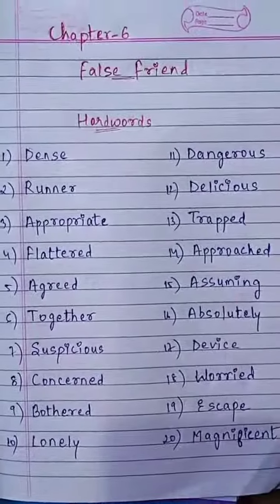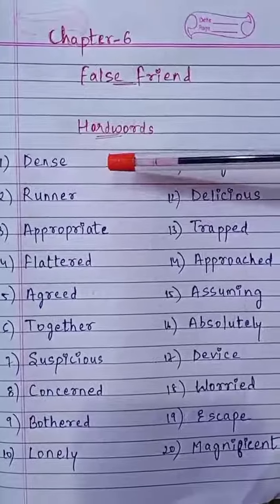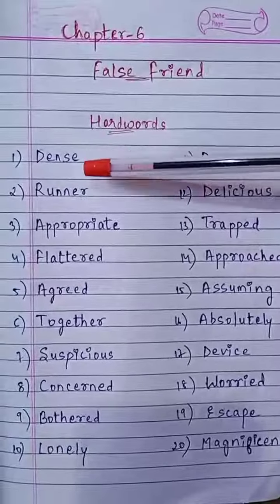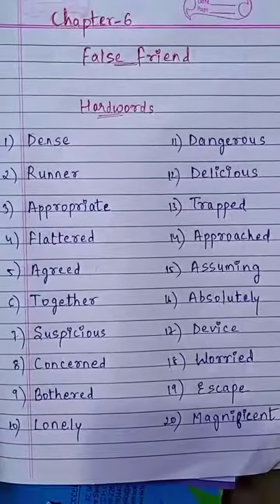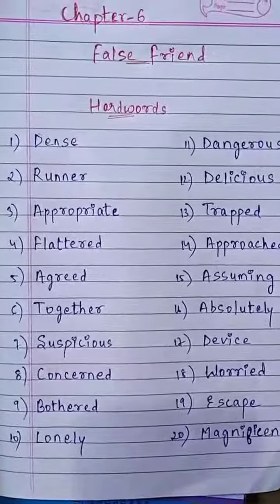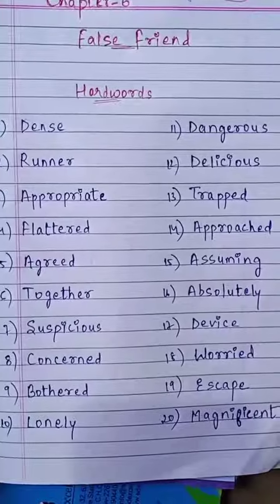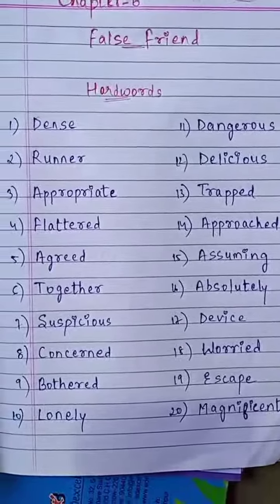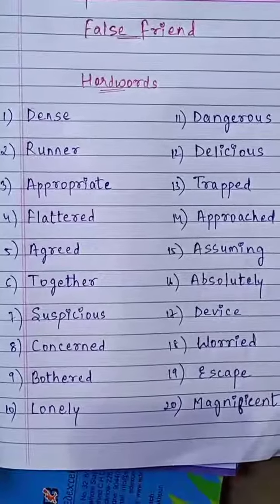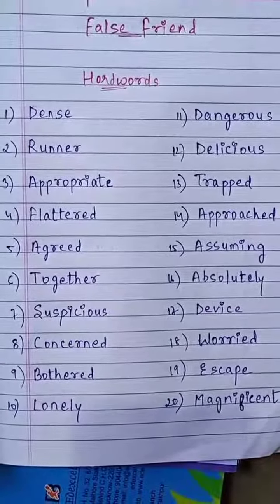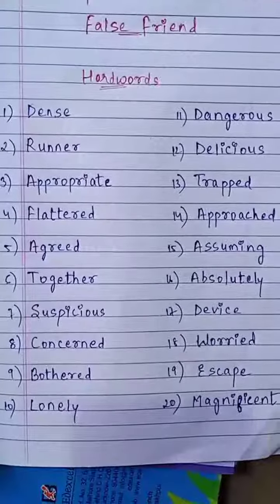Hard words of Chapter 6, 'False Friend.' The first one is dense, d-e-n-s-e, dense. Second one, runner, r-u-n-n-e-r, runner. Third one, appropriate, a-p-p-r-o-p-r-i-a-t-e, appropriate. Fourth, flattered, f-l-a-t-t-e-r-e-d, flattered. Fifth, agreed, a-g-r-e-e-d, agreed.